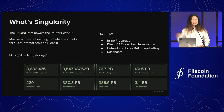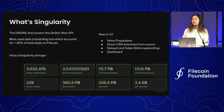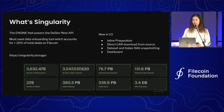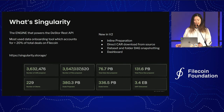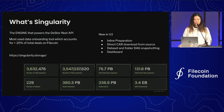So what is Singularity? Singularity is an engine that powers the DStore API to prepare data to be onboarded to the Filecoin network. It's the most adopted tooling in the Filecoin ecosystem. It accounts for 20% of all the data that's prepared for Filecoin. Since Singularity launched, we now have 229 clients from around the world who use Singularity to prepare 3 billion files, amounting to 340 PIBs of active deals, which translates to 3.4 exabytes of quality-adjusted power on-chain.